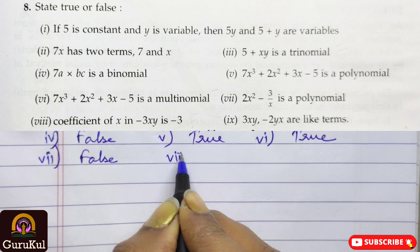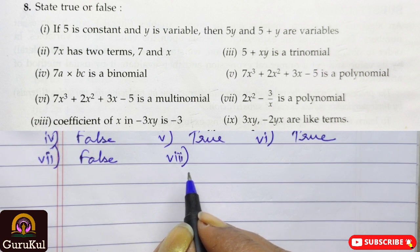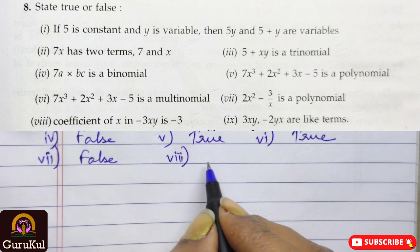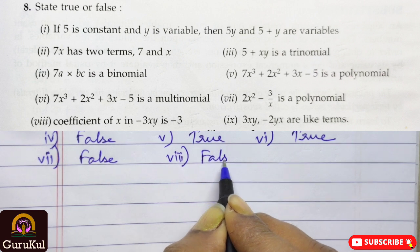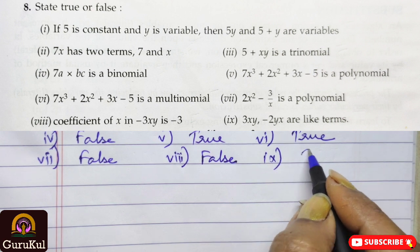Number 8, coefficient of x in minus 3xy is minus 3, again this is false. Number 9, 3xy and minus 2yx are like terms, true.